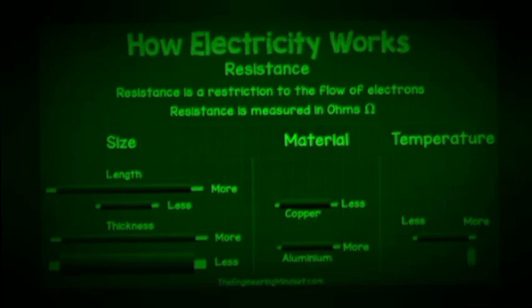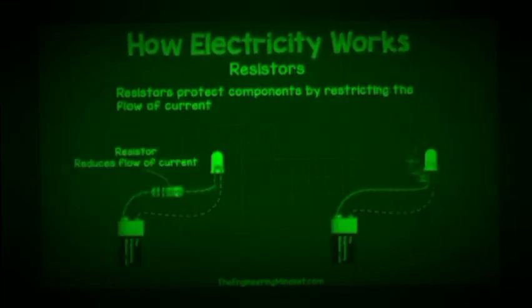And the temperature of the material can also modify electron flow resistance. Electrical circuits use specially designed components known as resistors to purposely limit the flow of electrons. This is either to safeguard different components from too many electrons flowing through it, or it can also be used to make light and heat, like in an incandescent light.